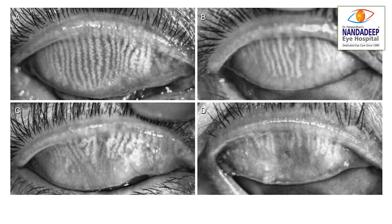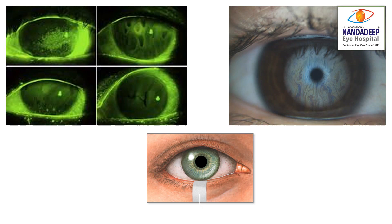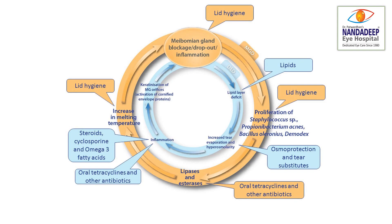We can measure it by checking all these different factors, but the easiest clinical way is to check for meibomian gland dropouts. There are various machines available. Also, simple fluorescein staining test, tear film break-up time, lipid interferometry, and Schirmer test give you a fair idea of how much dry eye the patient has.